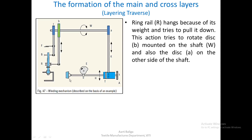For the formation of the main and cross layers — the layering traverse — ring rail R hangs because of its own weight. Since it is heavy, it will try to move downwards, pulling itself down. This action tries to rotate disc B mounted on shaft W, and also disc A on the other side of the shaft. All three discs try to rotate in the clockwise direction when viewed from the right-hand side.